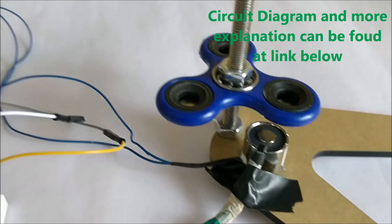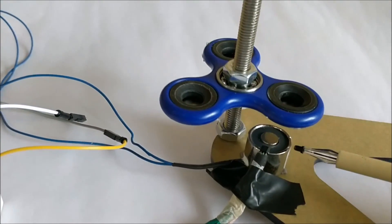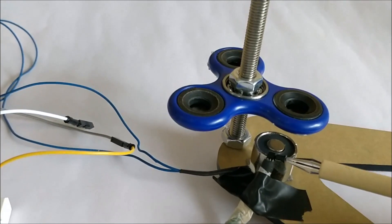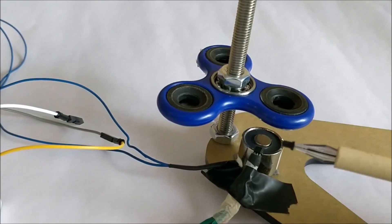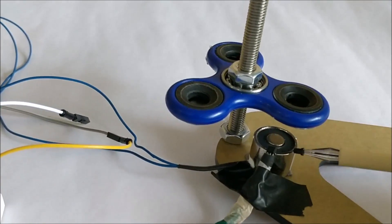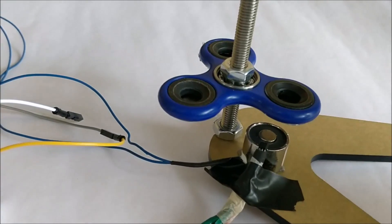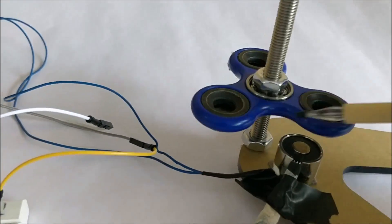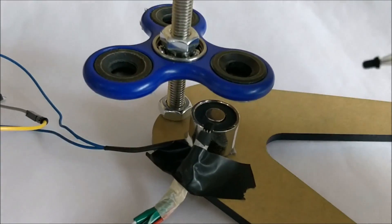So what actually happens here is this hall effect sensor will read the polarity of the magnet and it will control this electromagnet to repel these magnets that are present on this fidget spinner.